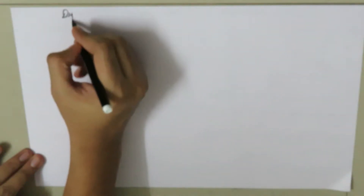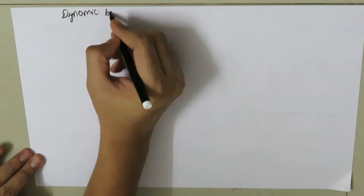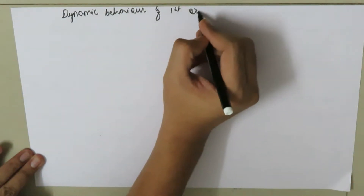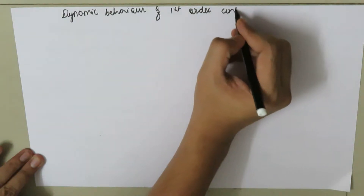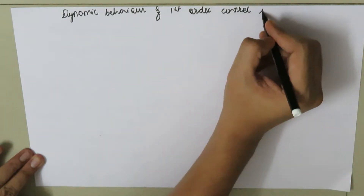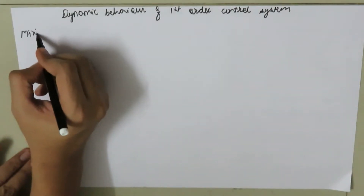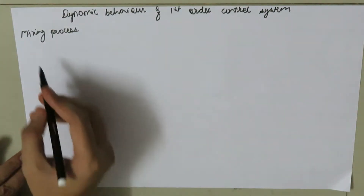Today we are going to study the dynamic behavior of a first-order control system by taking an example of a mixing process.